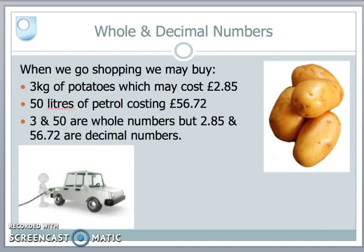I said we use decimal places in our currency. So I might go shopping and buy three kilograms of potatoes. That might cost £2.85. I might buy 50 litres of petrol. That might cost £56.72.